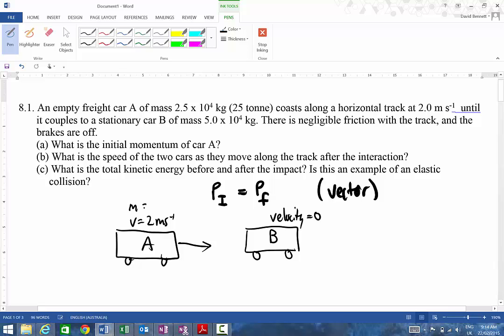And then we've got cart A over here moving in that direction there. It's got a velocity of 2 meters per second and it's got a mass of 2.5 by 10 to the 4 kilograms. This one over here has got a mass of 5 by 10 to the 4 kilograms, so it's twice as heavy.